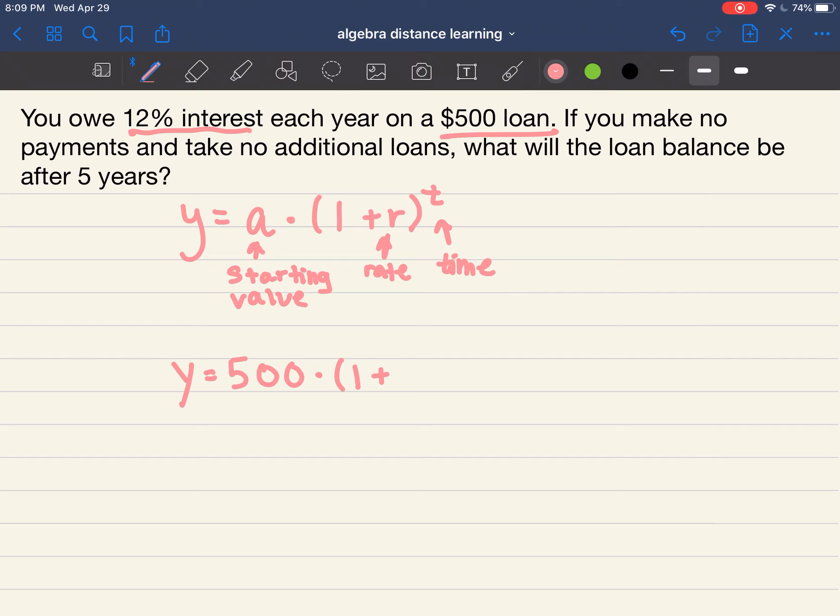Awesome, our rate is just another way to say our percent. Remember we make that into a decimal. So 1 plus 0.12 raised to the t. So this right here is our equation.